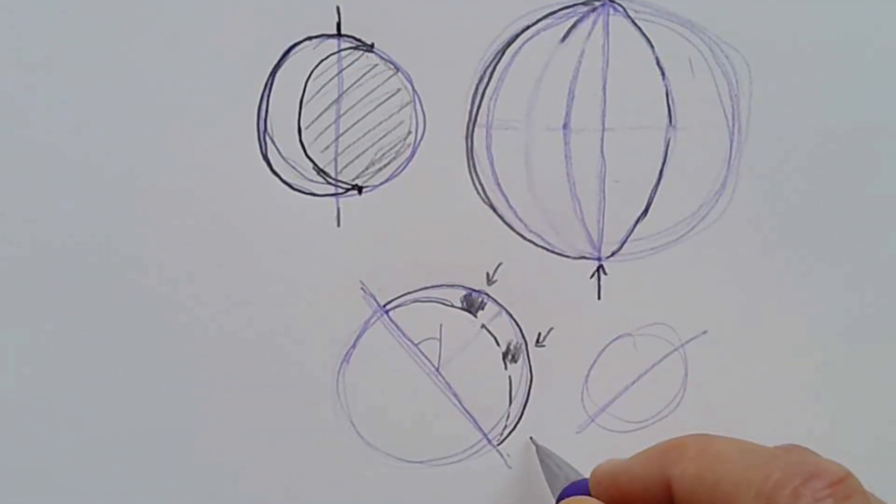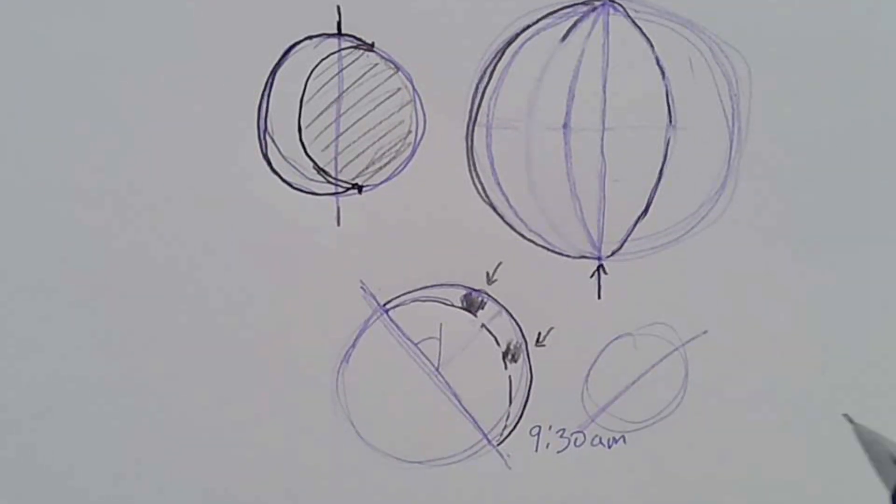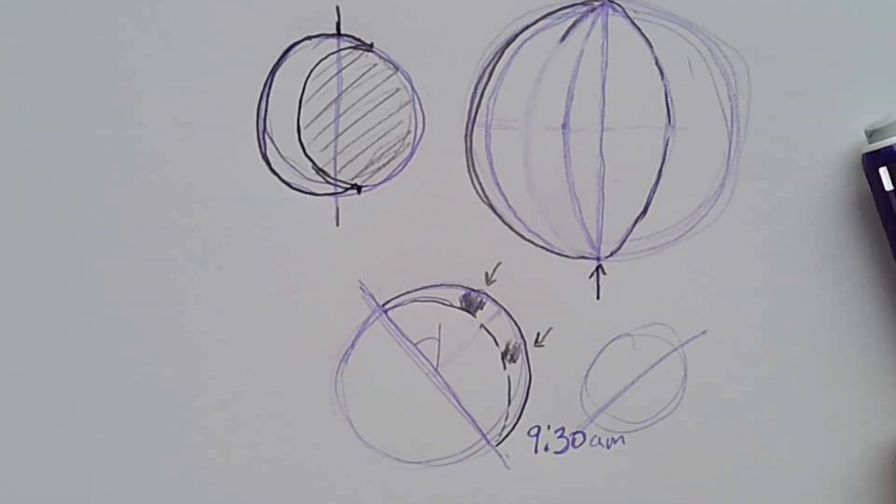With this, there's a few key other points of information. One is, what time was it when I made this observation? So, if it was at 9:30 a.m., I'm going to write 9:30 a.m. Get the time.